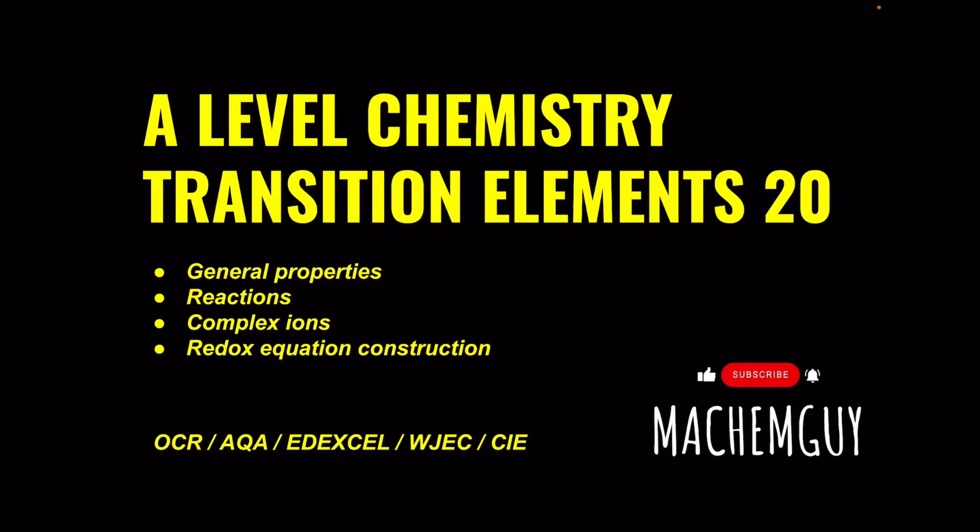I've got another exam question walkthrough for A-level chemistry, number 20 in the transition elements playlist. The question covers the general properties of the transition elements, some reactions, complex ions and the construction of a redox equation. The question is suitable for all major exam boards and if you haven't already subscribed to the channel, I'd really love you to do that. As always, the link to the questions is in the description if you want to try it first.